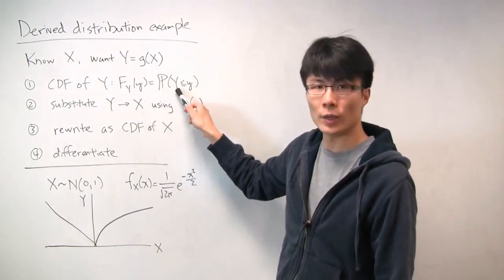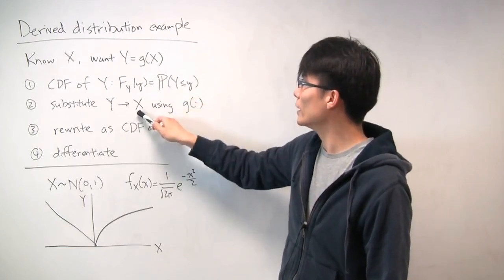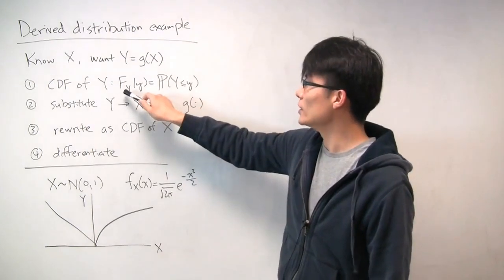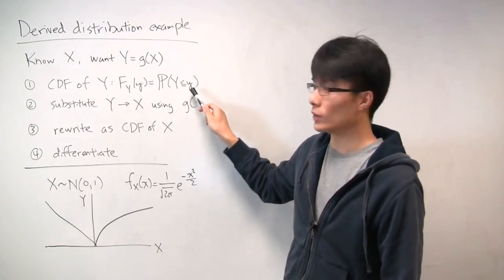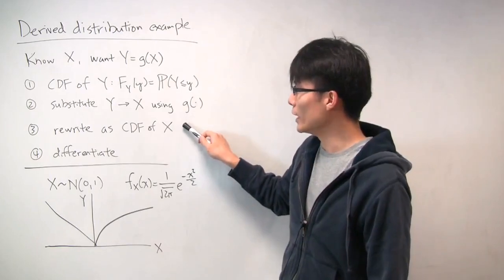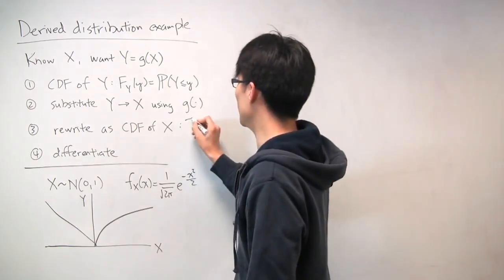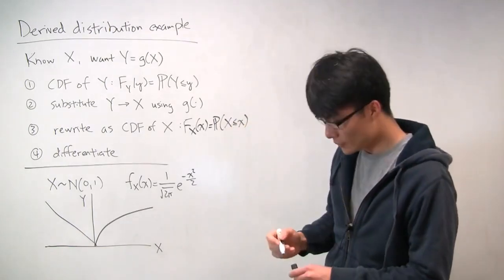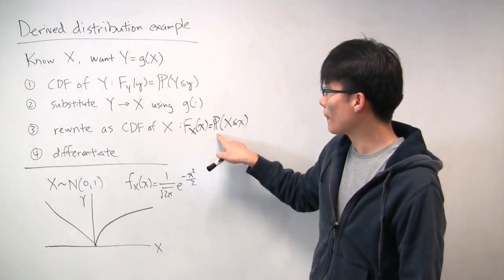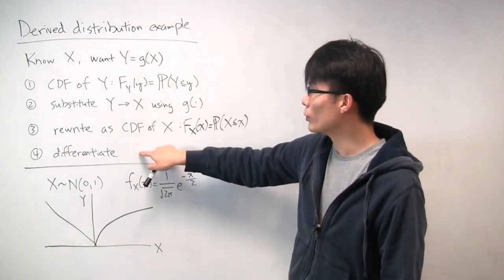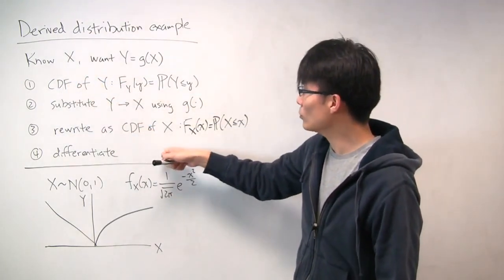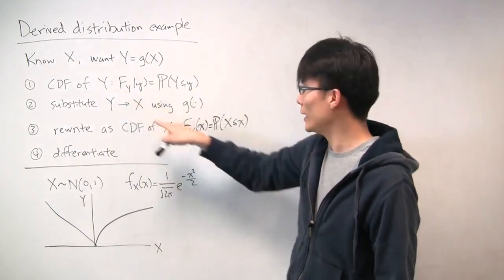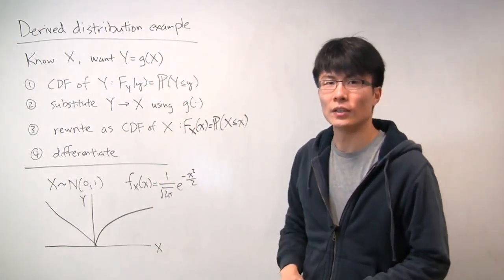Next, we use the known relationship between y and x and substitute in — instead of writing the random variable y, we write it in terms of x using the function g. So we now have the CDF of y expressed as a probability involving x. Then we rewrite this probability as a CDF of x, where F_x(x) is the probability that x is less than or equal to some little x. And once we have that, if we differentiate, differentiating the CDF of x gives the PDF of x, which we already know. From that, differentiating gives us the PDF of y — so we get a relationship between the PDF of y and the PDF of x.